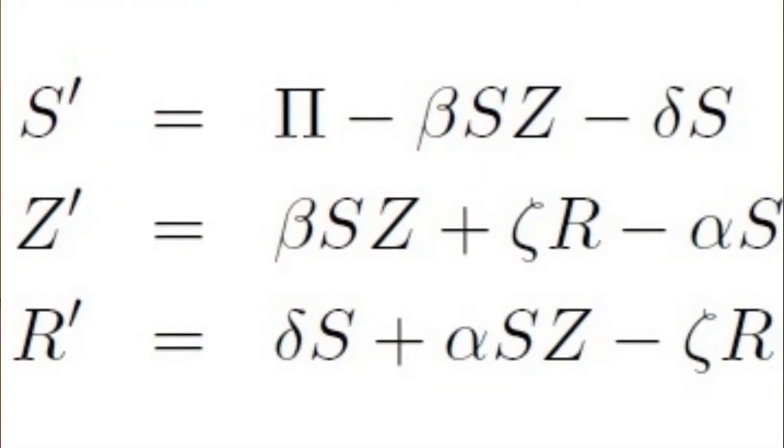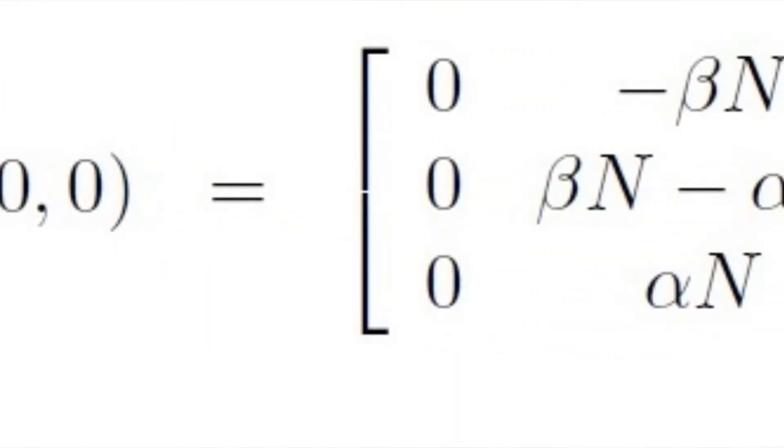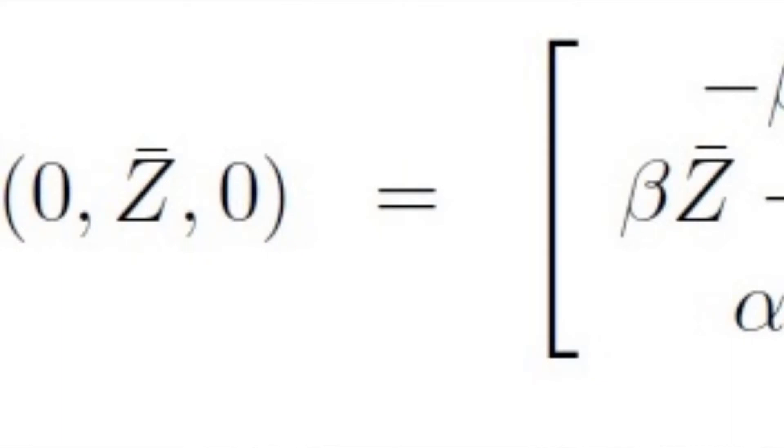Was wir mit diesem Basismodell machen, ist, dass wir uns das über eine kurze Zeitperiode anschauen. Können wir Stabilitäten feststellen? Das machen wir über Differenzialgleichungen — wir setzen diese gleich Null. Wir können zwei klassische Szenarien betrachten: Alle Menschen überleben, alle Zombies sterben — Z gleich Null, die virusfreie Umgebung. Oder das Weltuntergangsszenario: alle Zombies überleben, alle Menschen sterben.